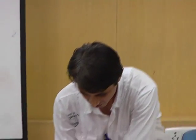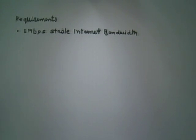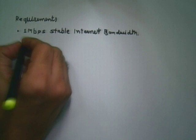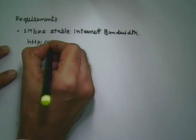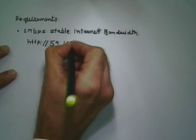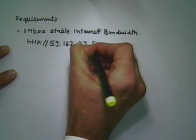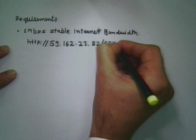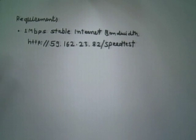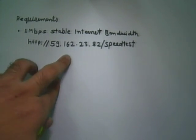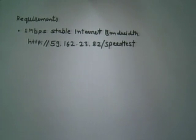Take a direct line and bypass the proxy in your institute. We have a URL to check the bandwidth, so you can check your bandwidth using this URL: 59.162.23.82/speedtest. You can check how much bandwidth you are getting.